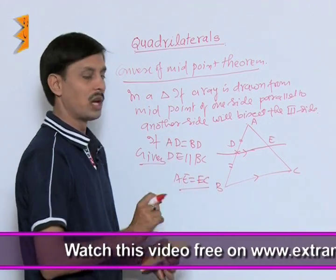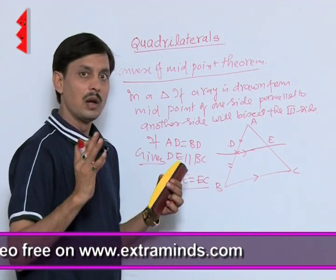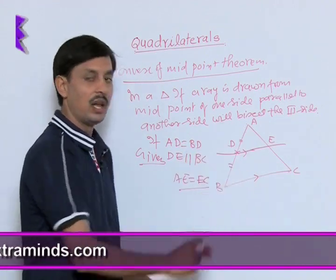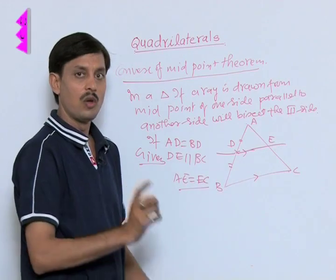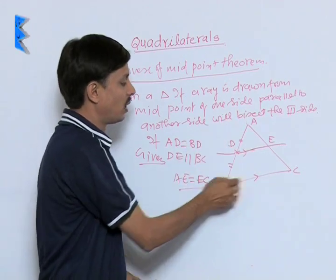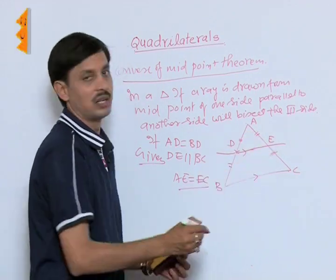This conclusion we will use many times in many theorems, many properties, many solutions. That in a triangle, if a line segment is drawn from the midpoint of one side parallel to another side, then it will bisect the third side.